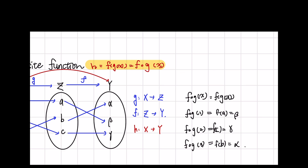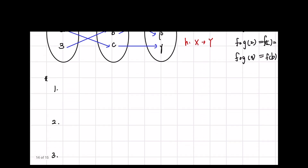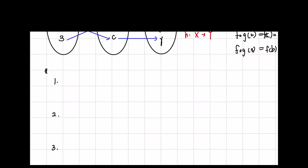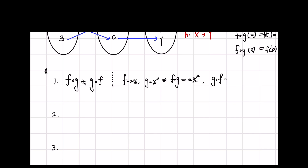Now we know the definition of composite functions. We are going to learn some properties. First, f composed with g is not always equal to g composed with f. Here is an example: if f is 2x and g is x squared, then f composed with g is equal to 2x squared, and g composed with f is equal to (2x) squared, which is equal to 4x squared. So f composed with g is not always equal to g composed with f.